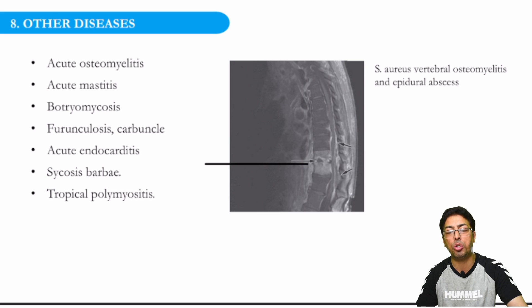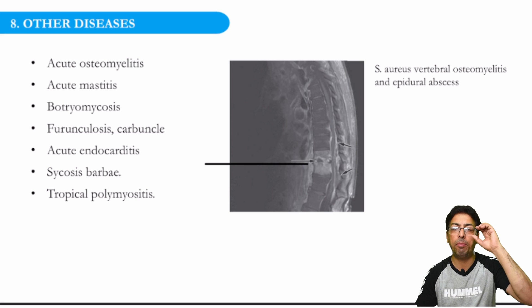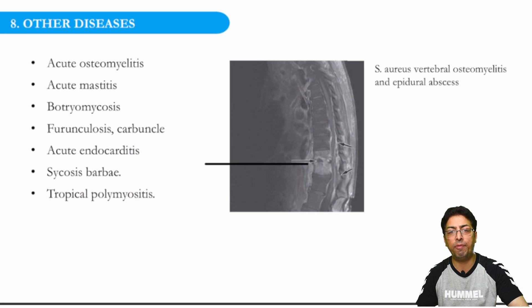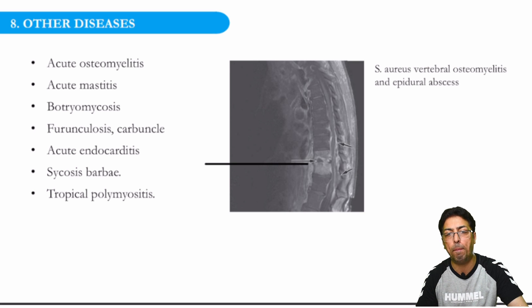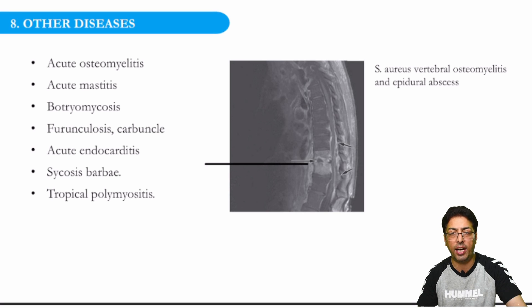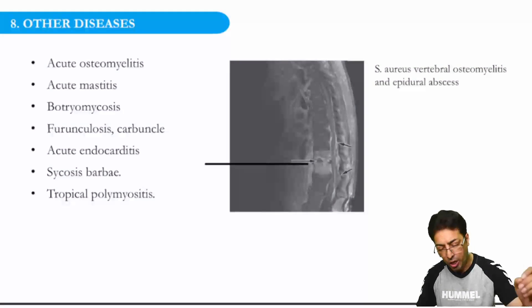Number two: acute mastitis. A female can present with an inflamed, tender breast due to lactation, unhygienic breast maintenance, or other factors — presenting with pain, swelling, and tenderness in the breast. This is acute bacterial mastitis, and the commonest organism is Staph aureus again. So two conditions: acute osteomyelitis and acute mastitis.